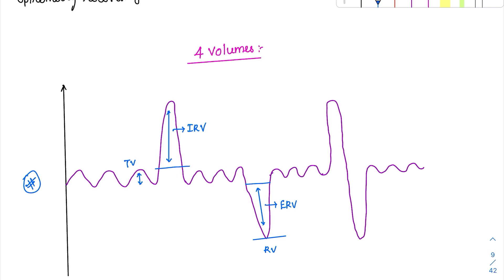Finally we will instruct the subject to take a deep breath followed by deep expiration. Whenever you do this procedure, this is the classical graph we are going to get. Along the x-axis I have not put the time factor; along the y-axis we have volumes only, because it is static.